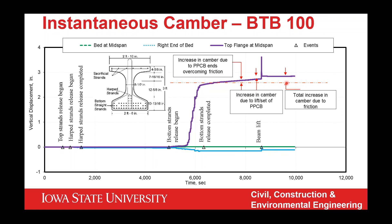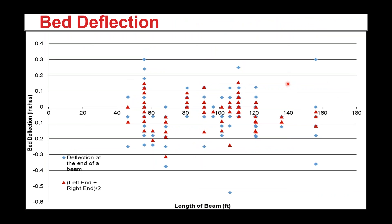There are two things picked up that have not been considered as issues in the past: bed deflection and friction. Bed deflections are usually small on average, but the magnitude depends on where on the bed the beam is positioned and how heavy the beam is. In some cases, bed deflection exceeded a quarter inch — significant when measuring camber to the nearest sixteenth.